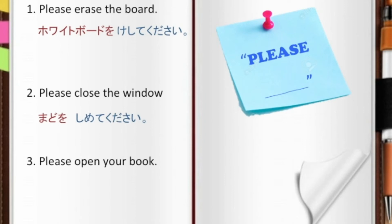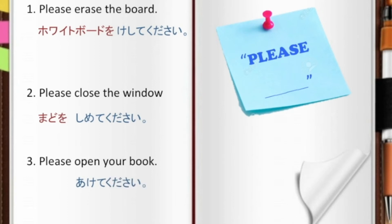Last example: please open your book. The word for open is akeru. We convert it into te-form: akete, plus the word kudasai — akete kudasai, please open. Then we add the direct object: hon o akete kudasai — please open your book.